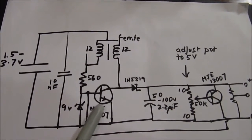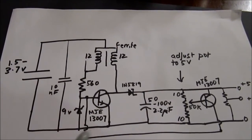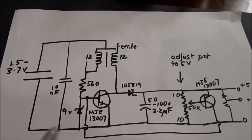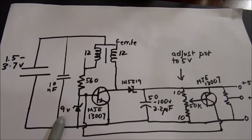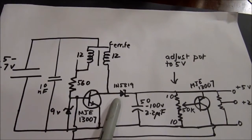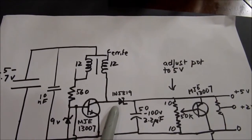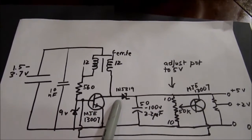The transistors I'm using are MJE13007. So this demonstrates this generates that high frequency 20 to 50 kilohertz alternating current, which is rectified with a Schottky diode.